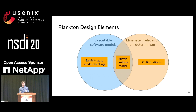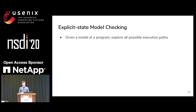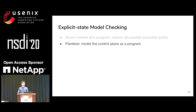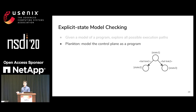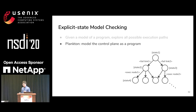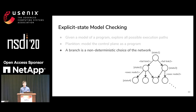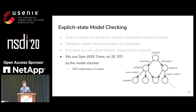With these two intuitions — executable software models and eliminating irrelevant non-determinism — our work, Plankton, can be divided into three parts. To have an executable software model, we use explicit state model checking, a common technique in software engineering. Given a model of a program, it will explore all possible execution paths. In Plankton, we model the control plane of the whole network as a single program. The model is essentially a transition system where each branch is a non-deterministic choice. We use SPIN as the model checker to explore the state space using DFS.